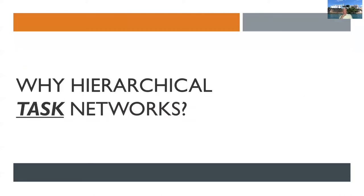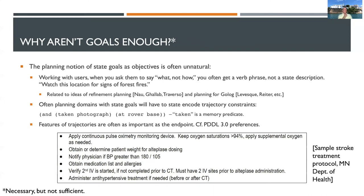This leads us to a closely related question: why hierarchical task networks? Why aren't goals enough? For the record, I mean that goals are necessary but not sufficient. From an applications perspective, I've over and over again found that when I talk to people about what they want a planner to do and repeat the usual injunctions about 'tell me what, not how,' I still more often than not get a verb phrase — an action description instead of an end state description. I often get an abstract action description, but it's still more often an action description than a goal state description. I think there may be something really counterintuitive about goal state descriptions as a way of describing a task.